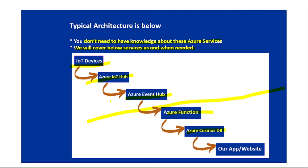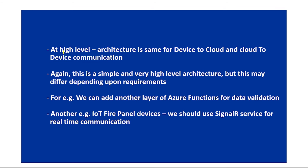From Azure IoT Hub, the information is sent to Azure Event Hub. Azure Functions pick up this information from Azure Event Hub, and once the fire or smoke detection data is available in the Azure Function, it is saved in Azure Cosmos DB. From there, it is displayed in our app or website.